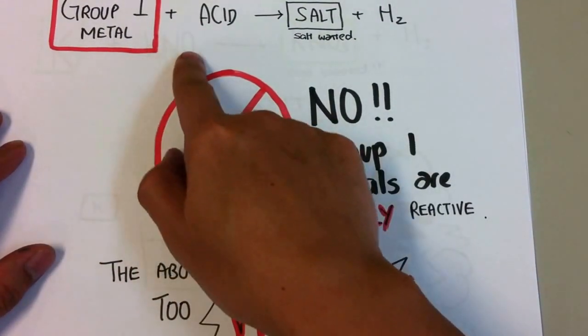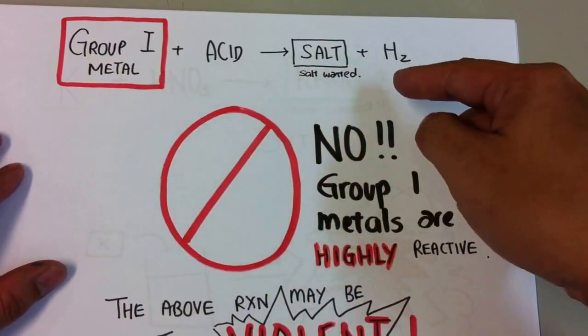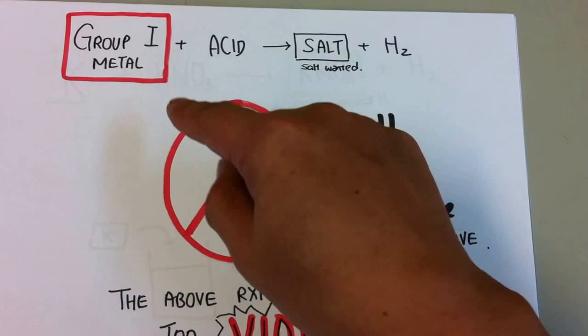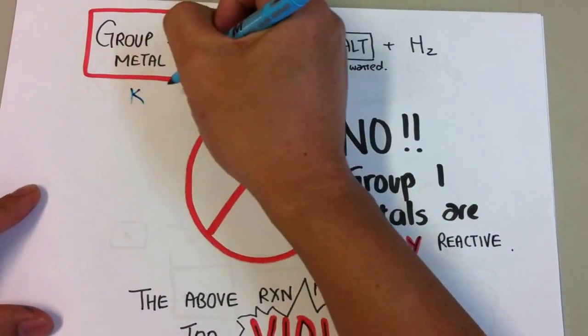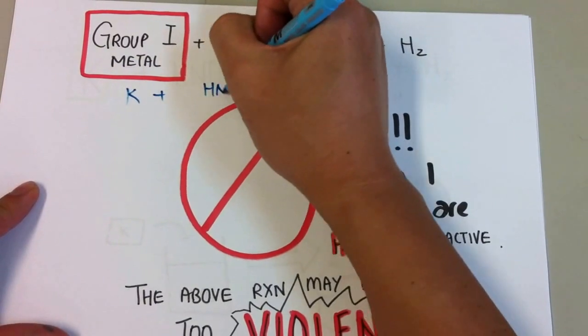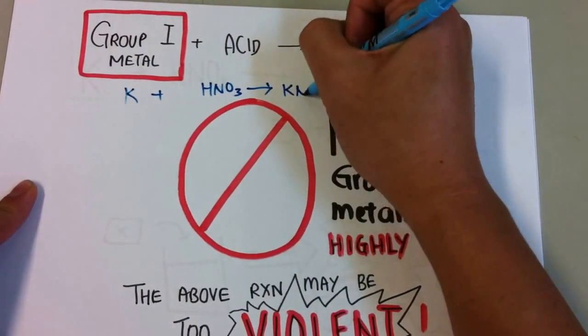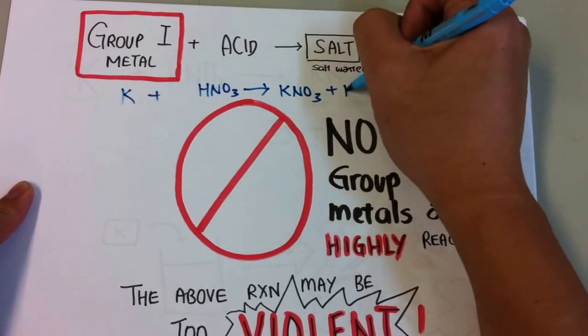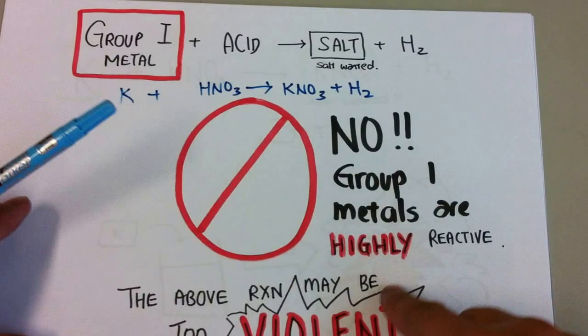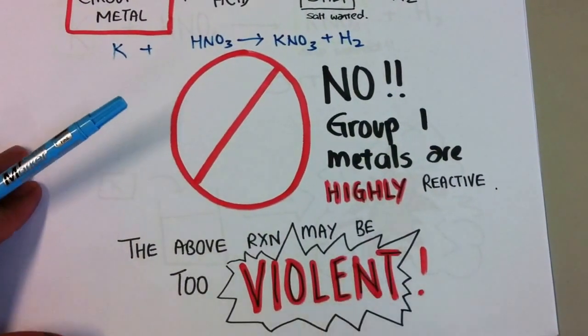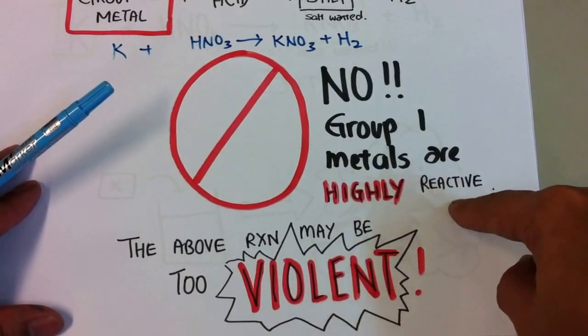When we want a group one salt, example, potassium nitrate, we would never do this. We would never put potassium plus nitric acid. Yes, the reaction will carry on. We will get potassium nitrate and hydrogen gas. But what you will get is a very violent reaction. We will get explosion because group one metals are simply highly reactive. Too reactive.